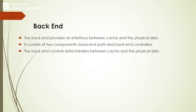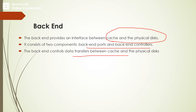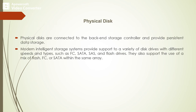The backend provides an interface between the cache and the physical disk. It consists of two components: backend ports and backend controller. The backend controller transfers data between the cache and physical disk. The last component in the intelligent storage system is the physical disk. Physical disks are connected to the backend storage controller and provide persistent data storage. Modern intelligent storage systems support a variety of disk drives with different speeds and types such as FC, SATA, SAS, and flash drives.